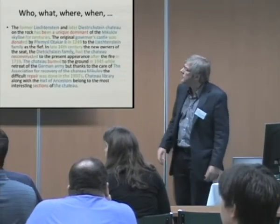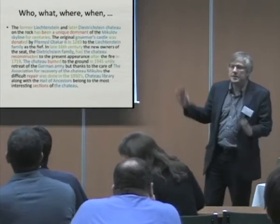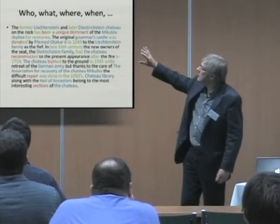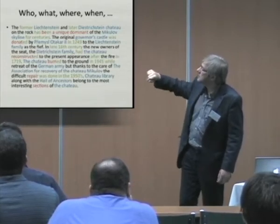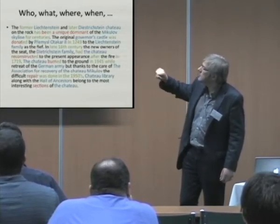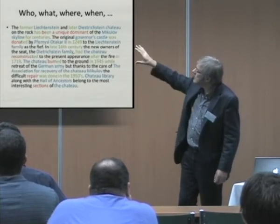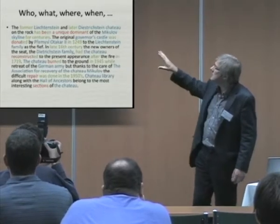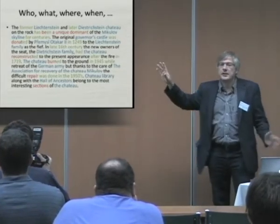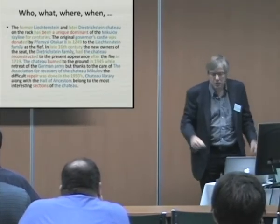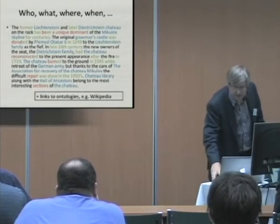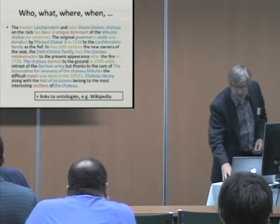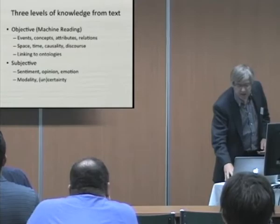Just to give you an example, this is a description of the visit some of us went on yesterday of the castle. There you see in blue the concepts, references to the concepts. In green the relations and time indicators. Red are the relations, etc. So you see this is a factual piece of text which contains a lot of factual objective knowledge, and you can link all the concepts to Wikipedia or to ontologies. That's the first level.